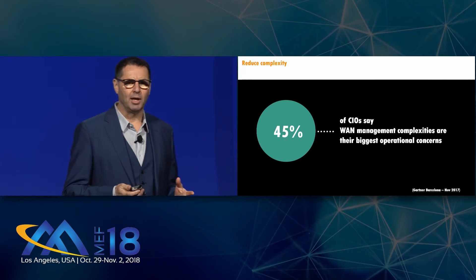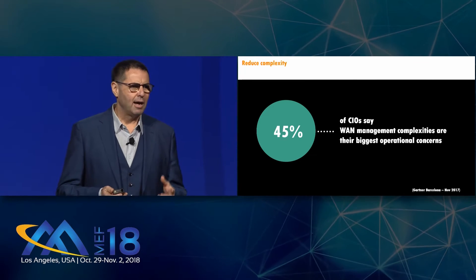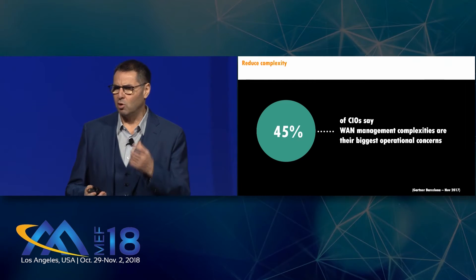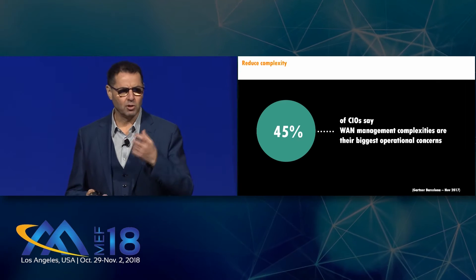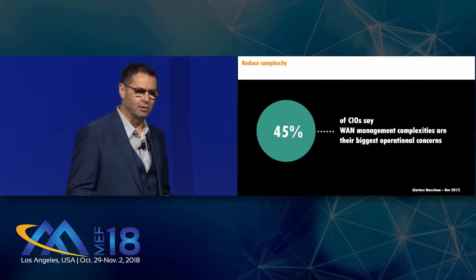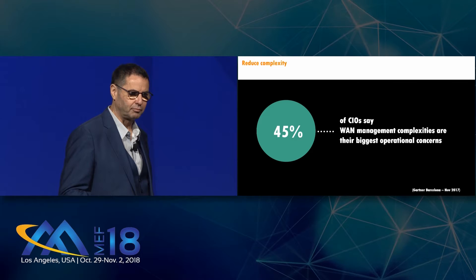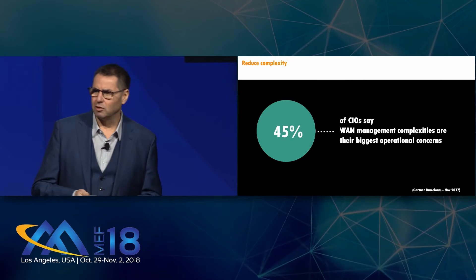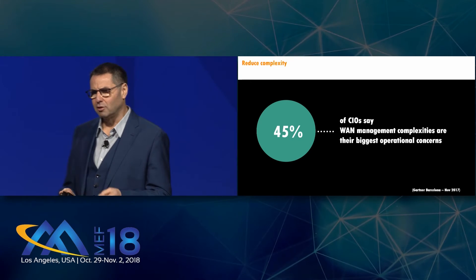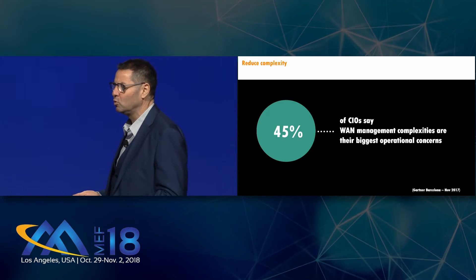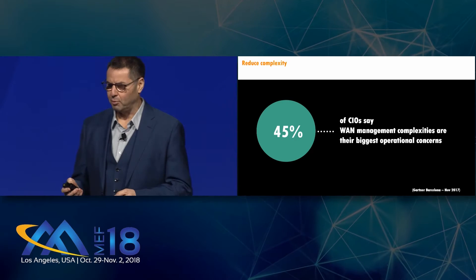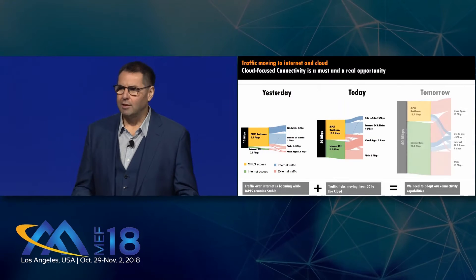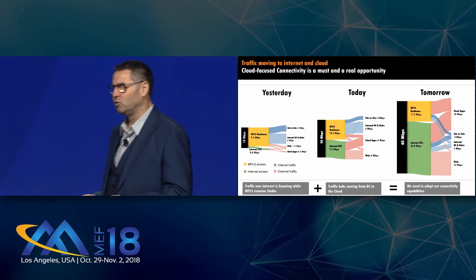Customers are trying to catch up with the evolution of IT, and they expect the network to become more agile with automated configuration, as the cloud is doing. Let's see how this cloud transformation translates into real life when it comes to traffic patterns, as you can see on this diagram.